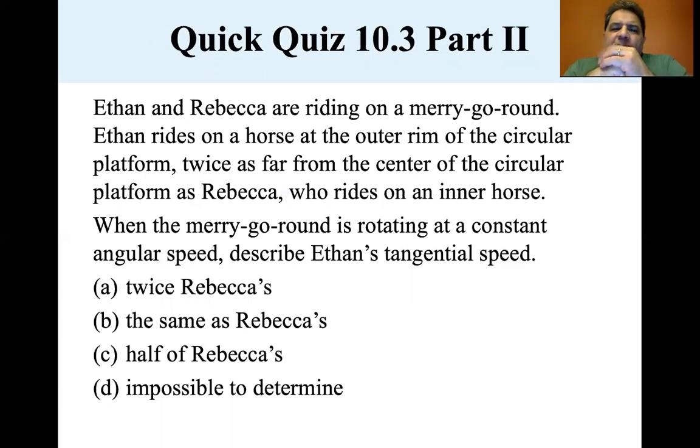Ethan and Rebecca are riding on a merry-go-round. Ethan rides on a horse at the outer rim of the circular platform, twice as far from the center of the circular platform as Rebecca, who rides on an inner horse. When the merry-go-round is rotating at a constant angular speed, describe Ethan's tangential speed. Now, if Rebecca is here and Ethan's out here and they're going like this, he's going twice as fast. He's going twice Rebecca's speed.